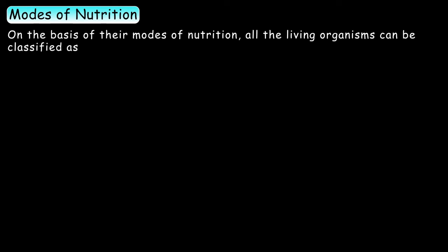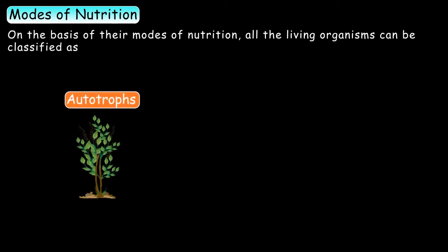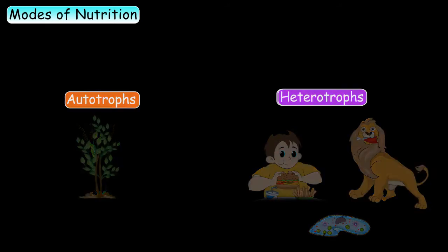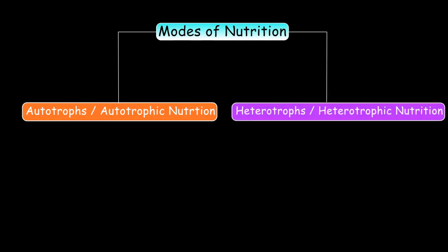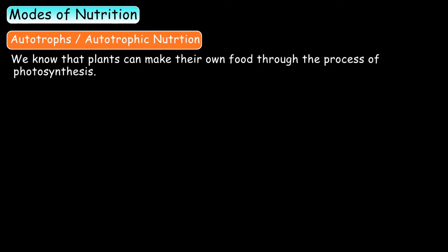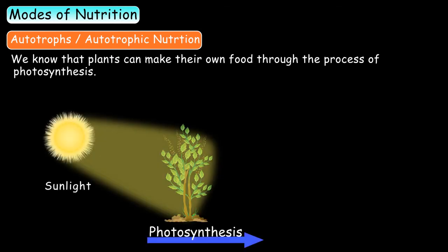In our last section, we learned about the different modes of nutrition. On the basis of the modes of nutrition, all living organisms can be classified as autotrophs or heterotrophs, and their modes of nutrition are known as the autotrophic and heterotrophic modes of nutrition respectively. We know that plants can make their own food through photosynthesis. In this process, green plants and some other organisms use sunlight to synthesize complex compounds like carbohydrates, using carbon dioxide and water.